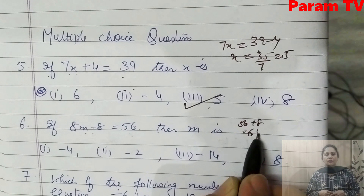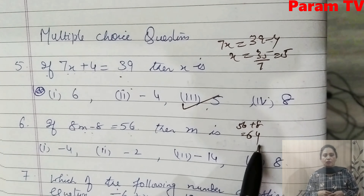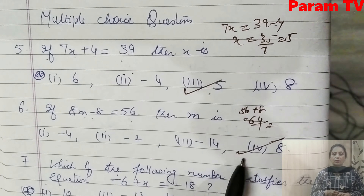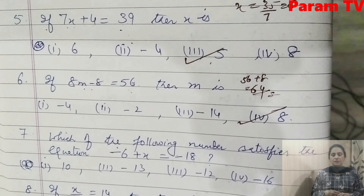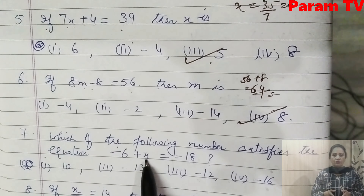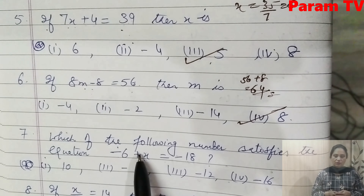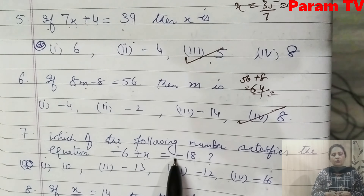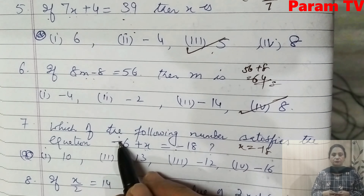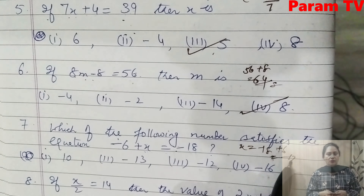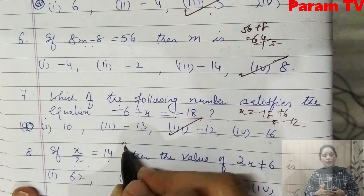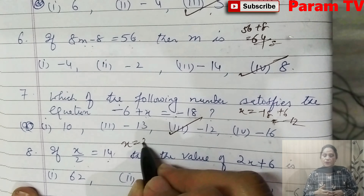Next: which of the following numbers satisfies -6 + x = -18? So x = -18 + 6 = -12. The third option is the right answer. Next: if x/2 = 14, then x = 28. What is the value of 2x + 6? That means 2 × 28 + 6 = 56 + 6 = 62. So 62 is the answer — the first option is correct.